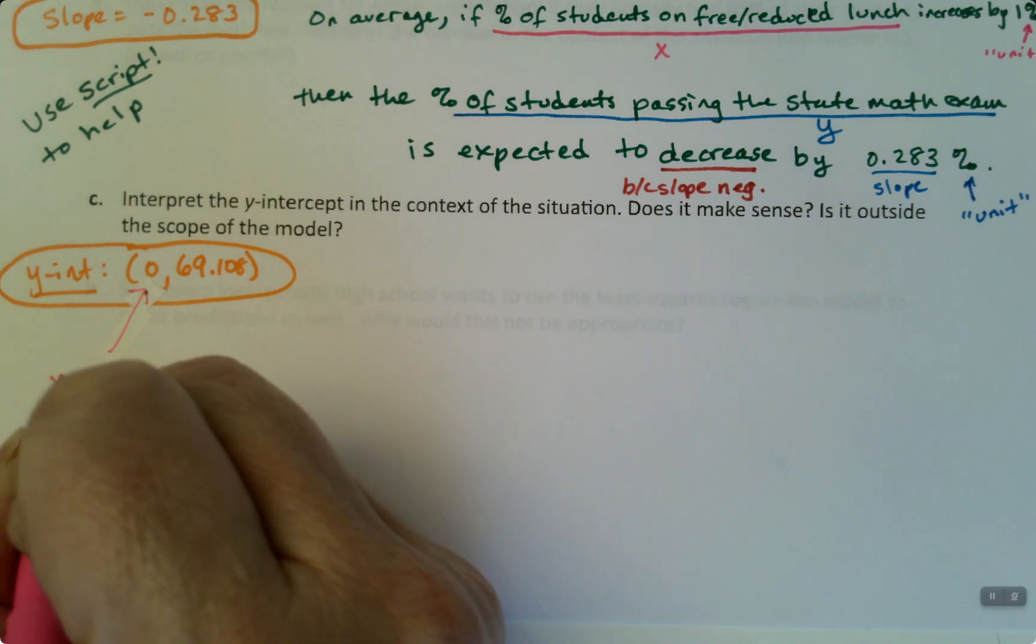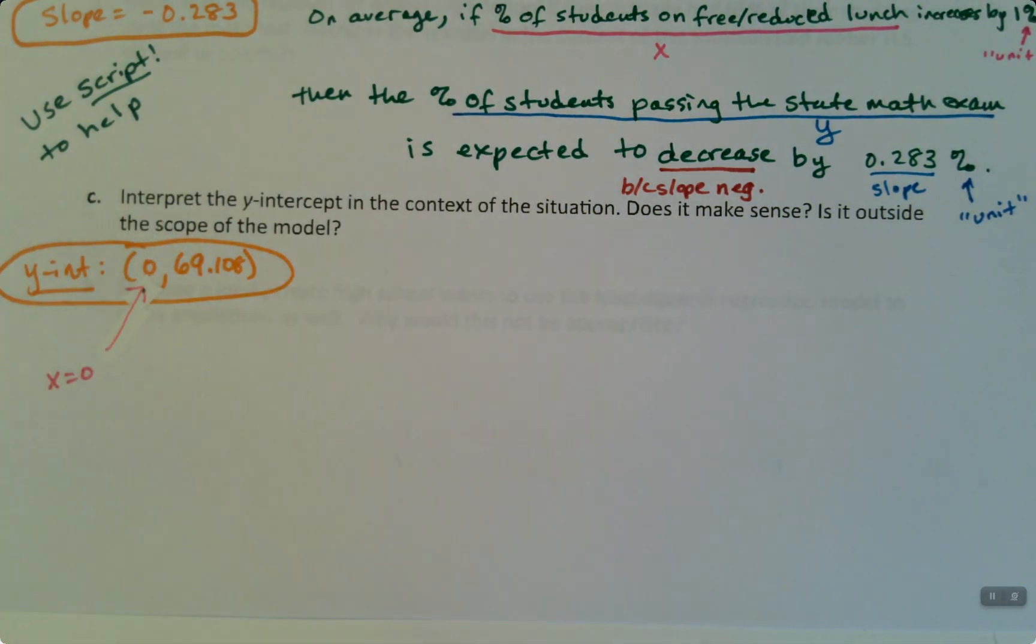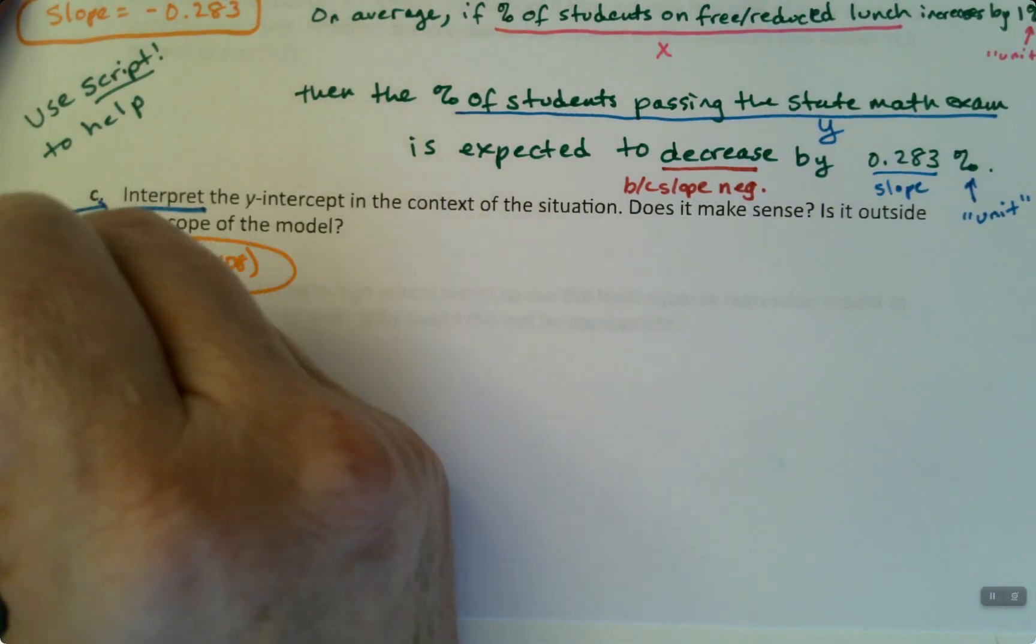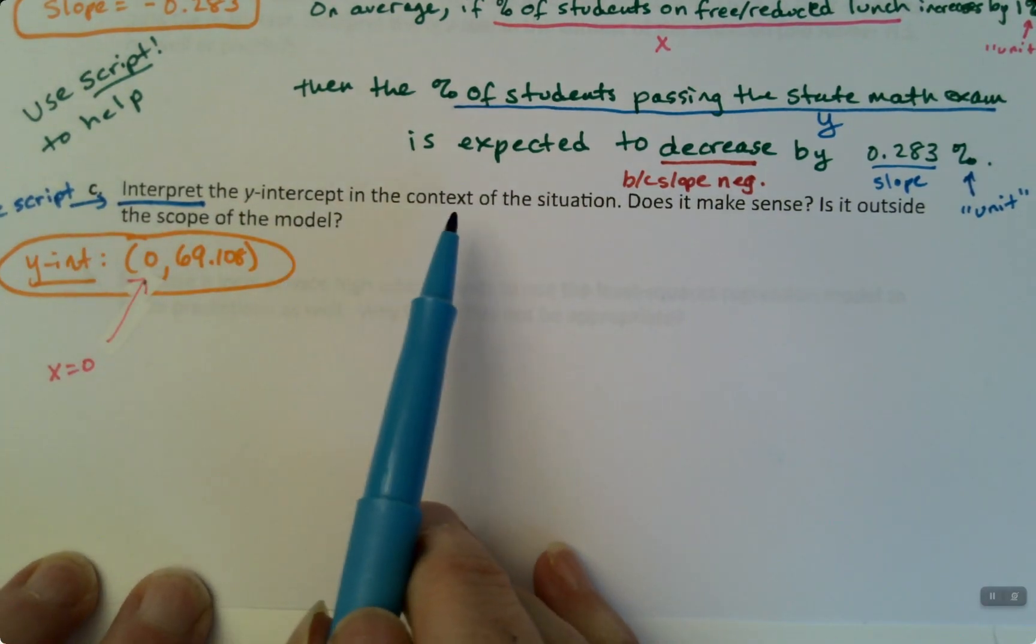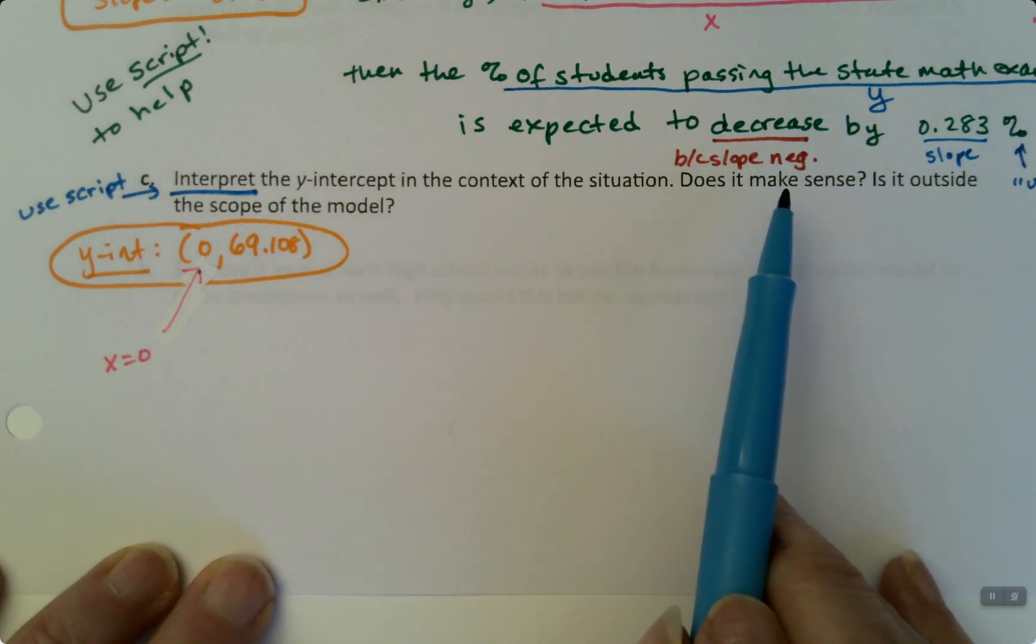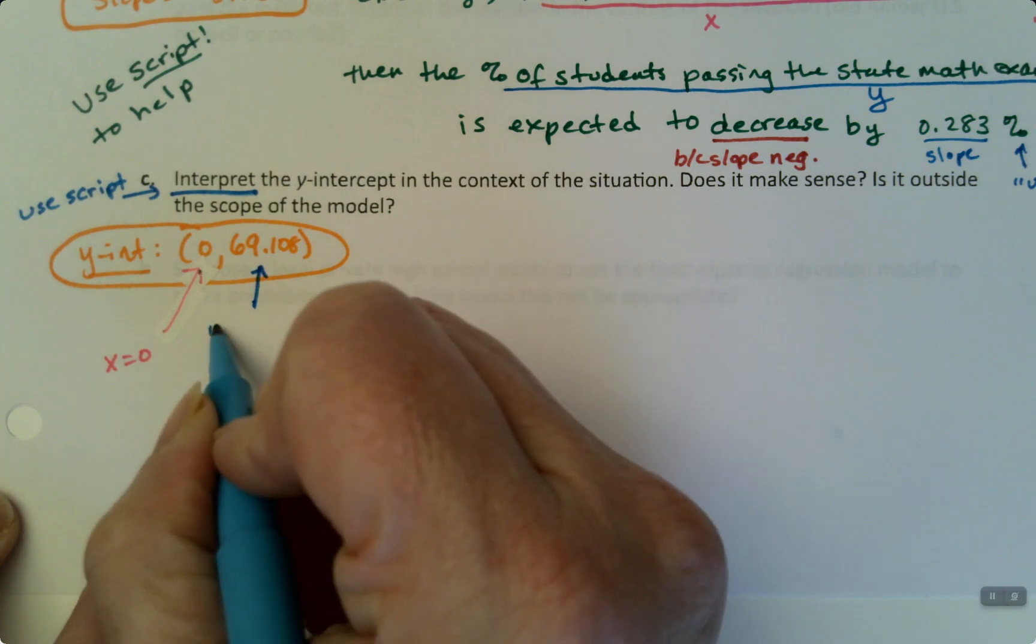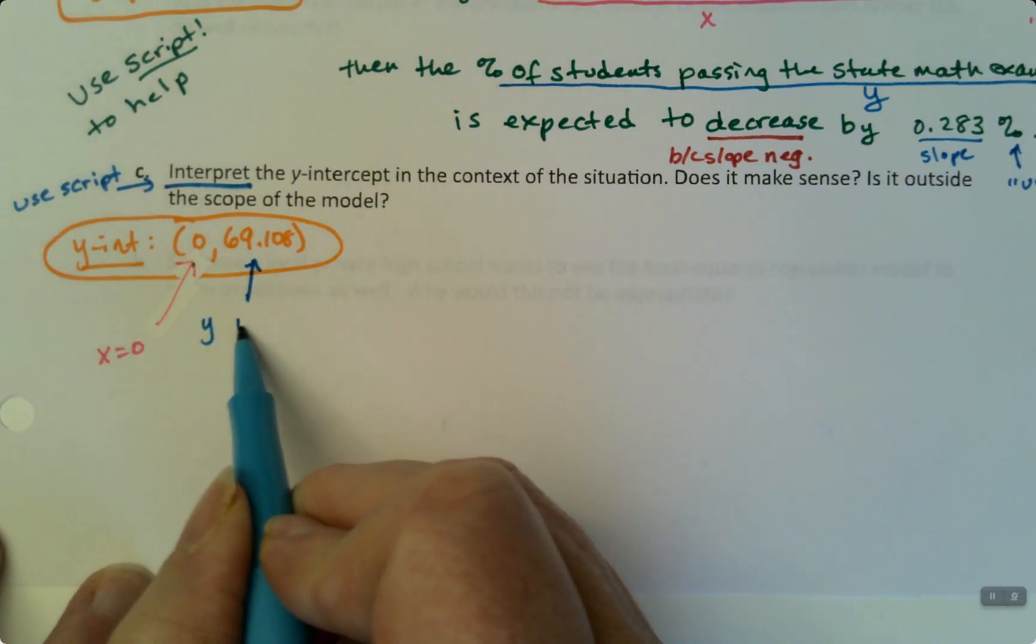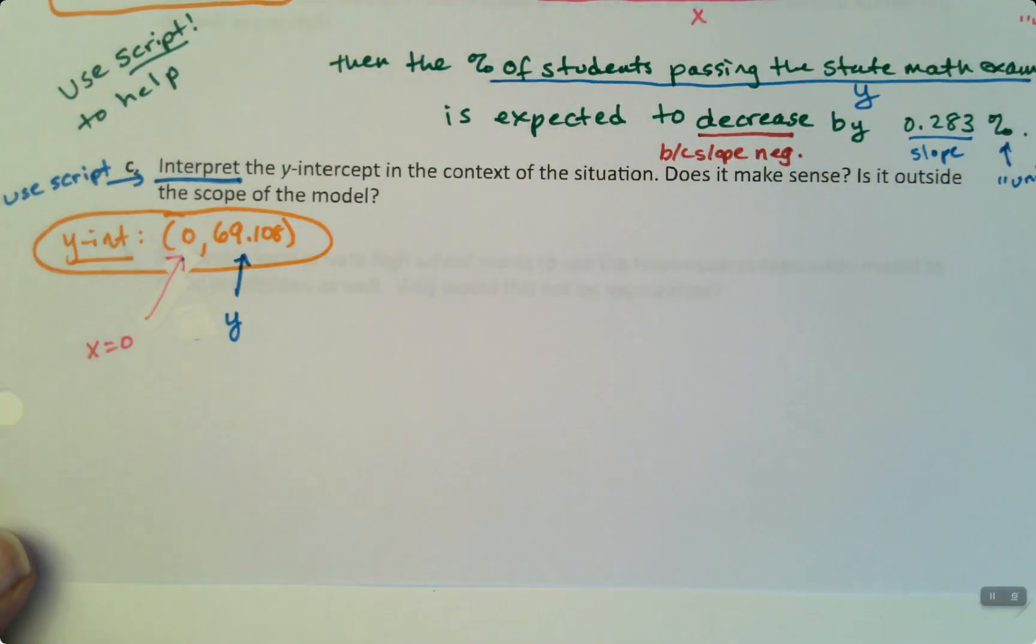Sometimes I'll say to you, hey, interpret. When I say interpret, or not me, your instructor, if you're watching this with another instructor, so interpret, that means use the script. So you can interpret with the script the Y-intercept, but then I sometimes say don't bother interpreting, just tell me why it does not make sense. But this example, I'm actually asking for both. Sneaky, right? So that's your X, that's your Y.